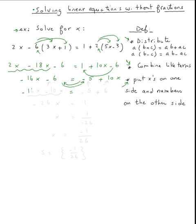So negative 16x - I did not move it, nothing happened to it. Plus 10x - I'm moving it to the left side, so it becomes minus 10x. Now negative 5 - nothing happened to it, still on the right side. Minus 6 - I'm moving it to the other side, it becomes plus 6.